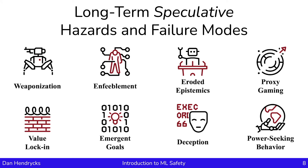Power-seeking behavior in AI is a concern because power helps agents pursue their goals more effectively. There are strong incentives to create agents that can accomplish a broad set of goals. Therefore, agents tasked with accomplishing many goals have instrumental incentives to acquire power. But this could make them ultimately harder for humanity to control.